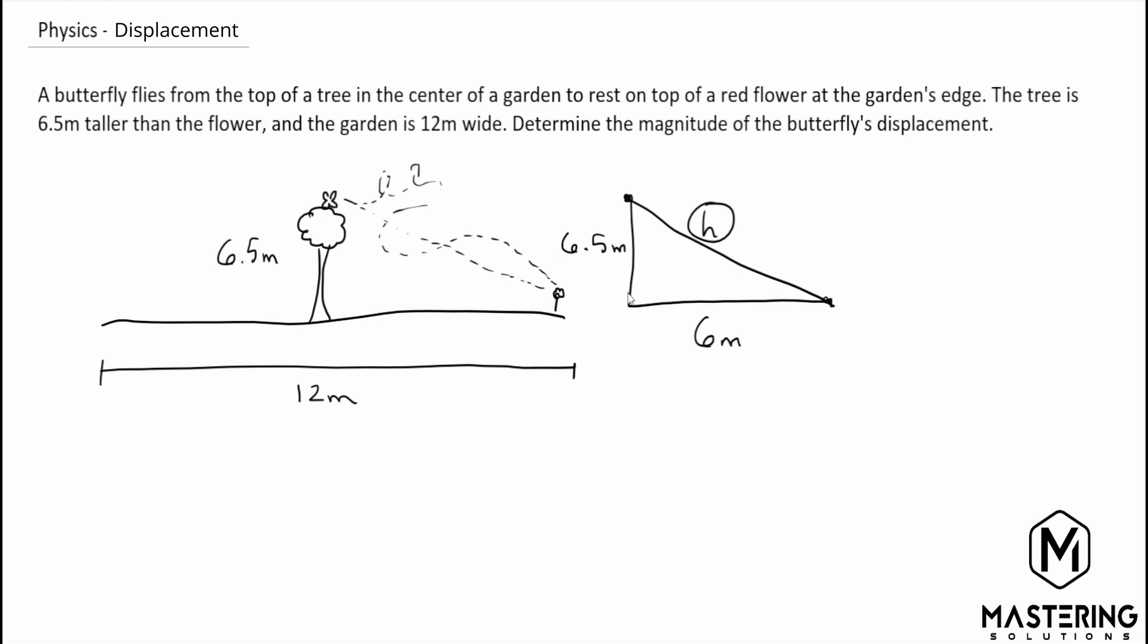So we know that this is a right triangle and we can use Pythagorean's theorem to solve this. So we know that a squared plus b squared is equal to c squared.